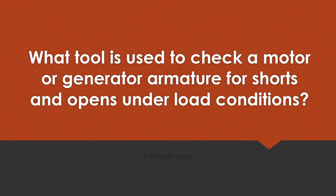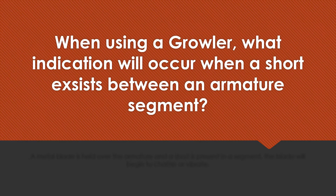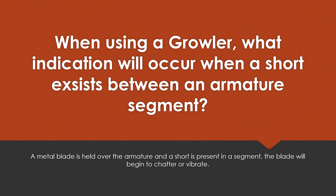What tool is used to check a motor or generator armature for shorts and opens under load conditions? A Growler Tester. When using a growler, what indication will occur when a short exists between an armature segment? A metal blade is held over the armature, and if a short is present in a segment, the blade will begin to chatter or vibrate.